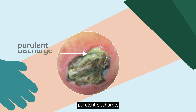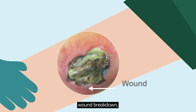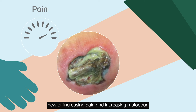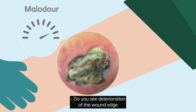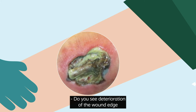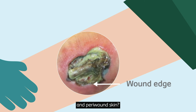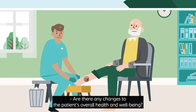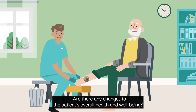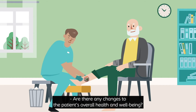Additional signs of infection include purulent discharge, wound breakdown, new or increasing pain, and increasing malodour. Also consider whether you see deterioration of the wound edge and peri-wound skin, and whether there are any changes to the patient's overall health and well-being.